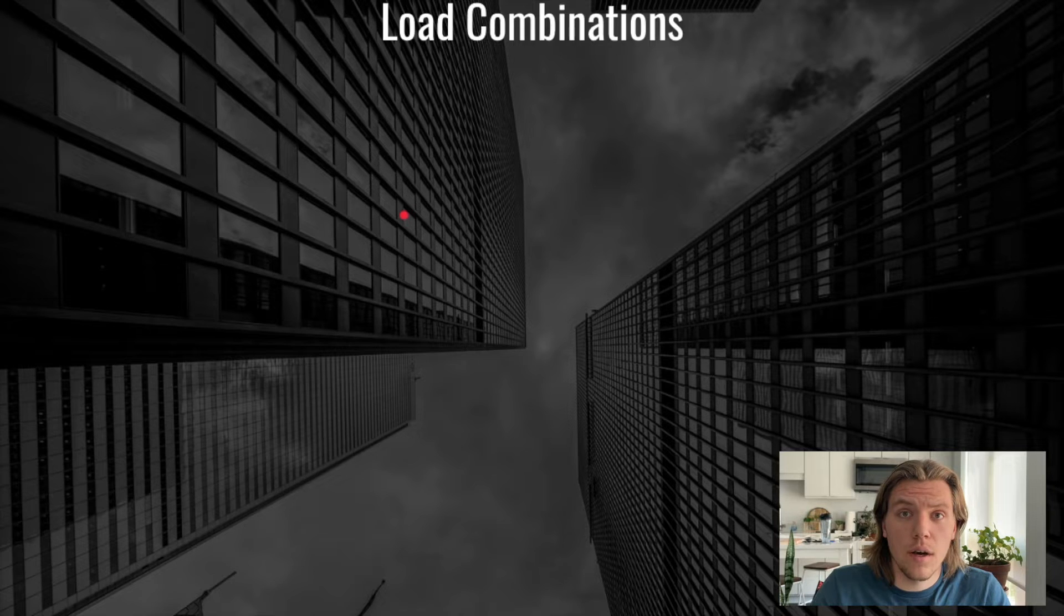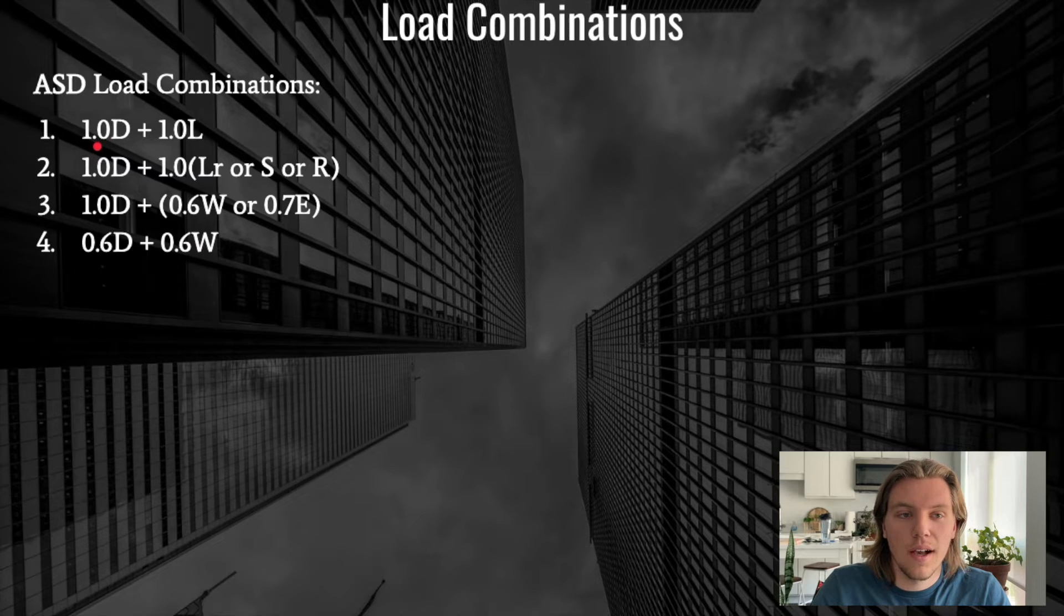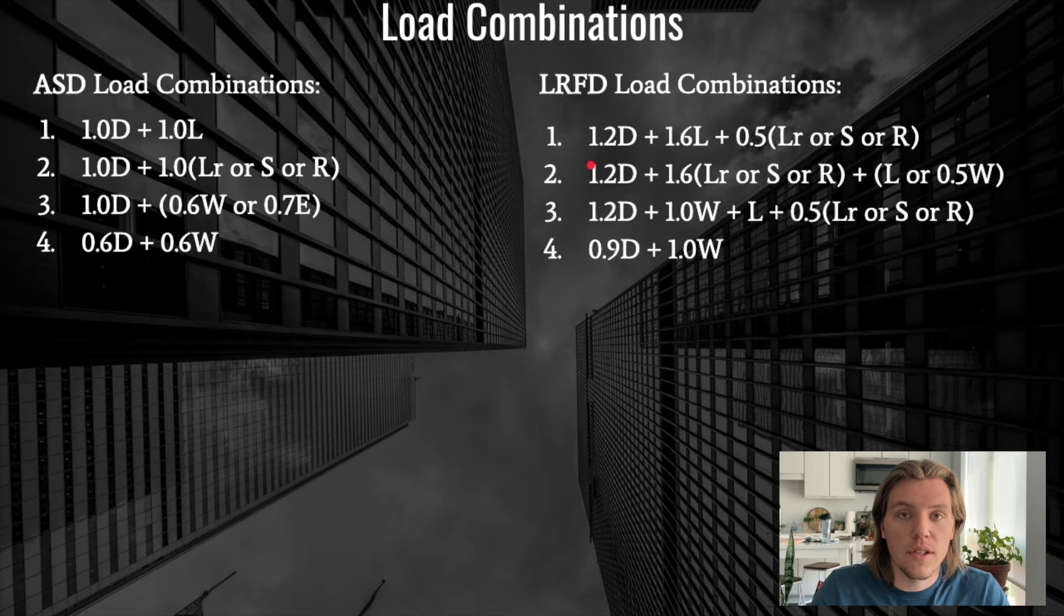So let's take a look at our load combinations. If we look at a few example ASD load combinations, we can see that at service level, and if you haven't seen these before, you'll notice that there's only a 1.0 factor on the majority of these loads. Some of these load factors are being reduced. That is accounting for the probability that they're all going to happen at the same time. But we can see that for the majority of the cases here, 1.0 times the dead load plus 1.0 times the live load, that is the service level that we're talking about. That is the actual level of load that we're applying to the structure and analyzing it for.